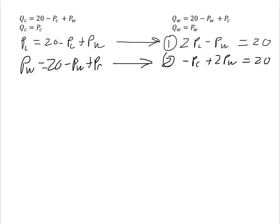I'm going to take equation 1 and multiply it by 2 to get 4PC minus 2PW is equal to 40. Add the two equations together and I have 3PC, there's no PW, is equal to 60. So PC is equal to 20.